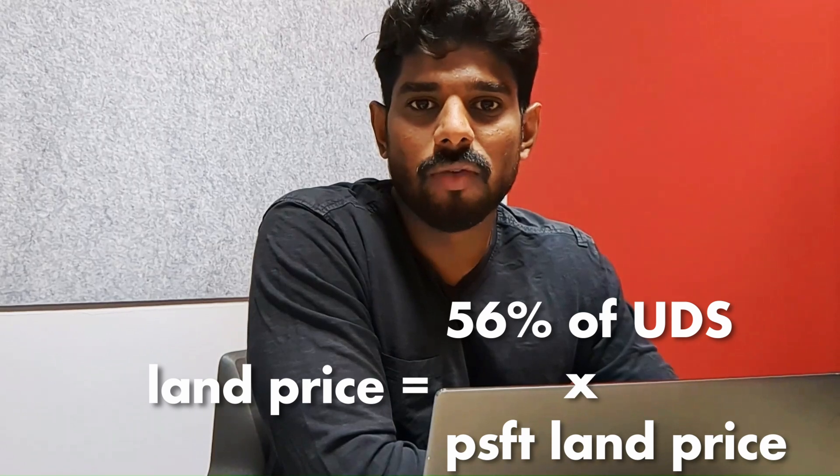Now find a neighborhood plotted development and gather the per square feet price. But you cannot directly multiply that number with your UDS. Because if the entirety of your society is converted into plotted development, not all the land can be equally divided into plots — you have to leave space for roads, parks, and civic amenities. In that case, only 56% of the entire land can be saleable plot. So the land price of your apartment will be 56% of the UDS multiplied by the per square feet price of land in that neighborhood. For a hypothetical 2BHK with 300 square feet of UDS and a land cost of ₹15,000 per square feet, the land value of this apartment will be ₹25,20,000.